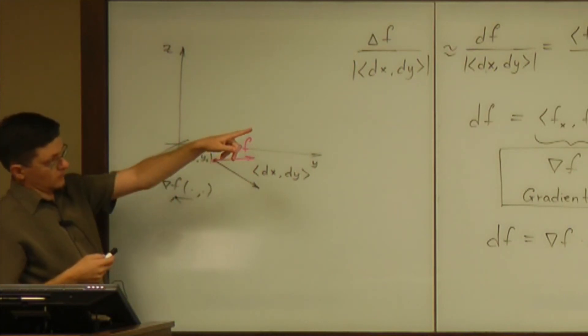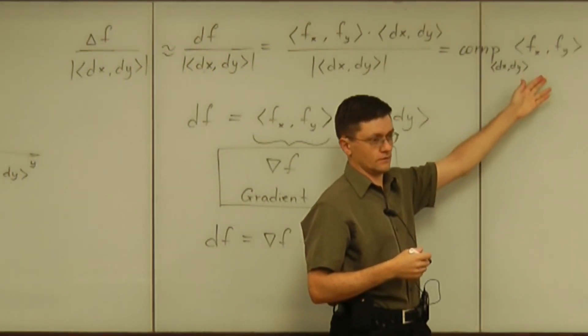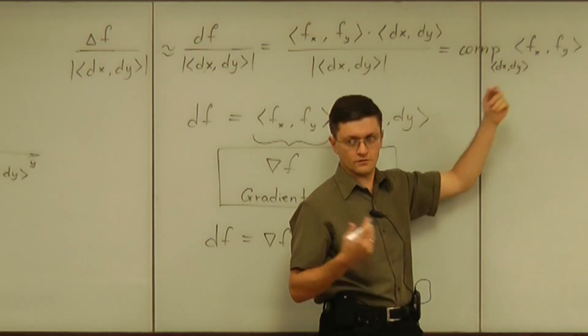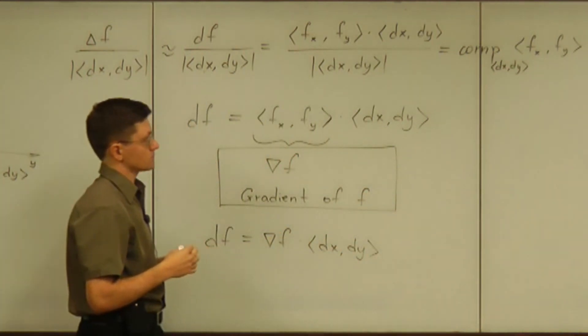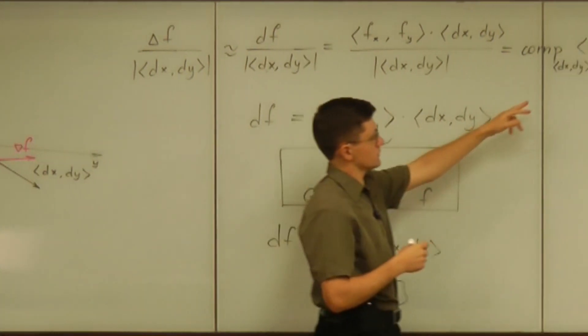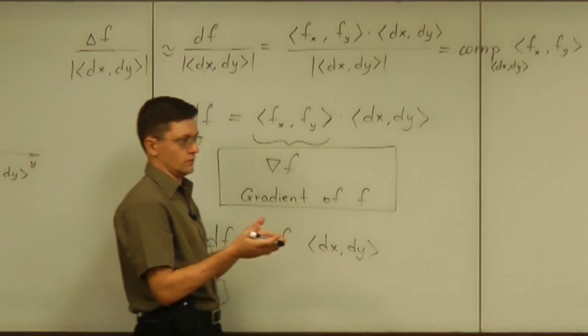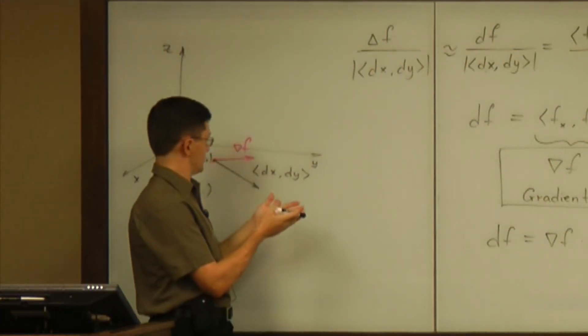Now the question is what is it that we can extract from this algebra geometrically? Geometrically what that says is that this gradient determines completely the rate of change of f in each direction. How can we do that geometrically?